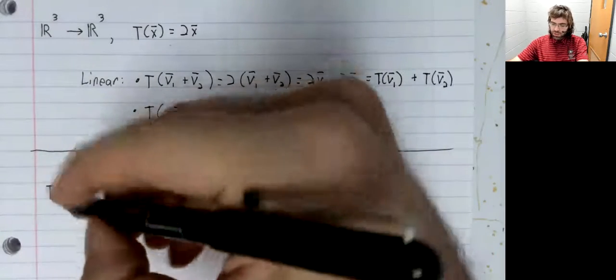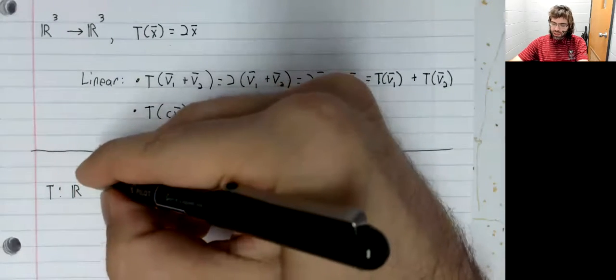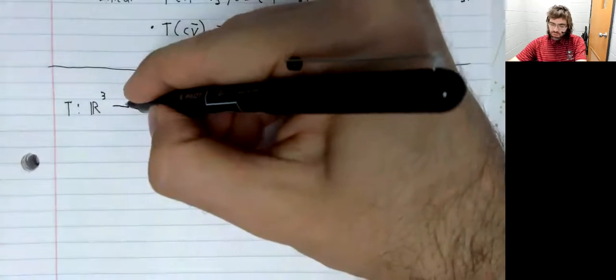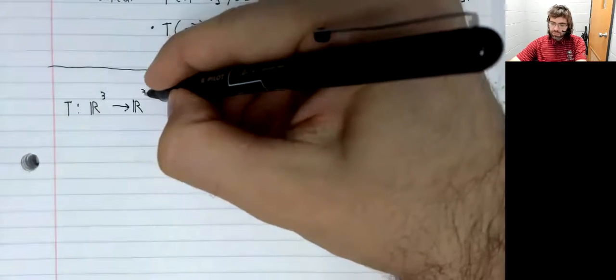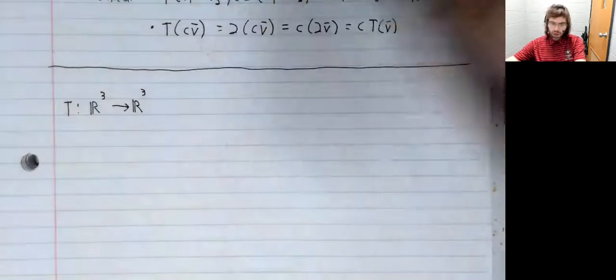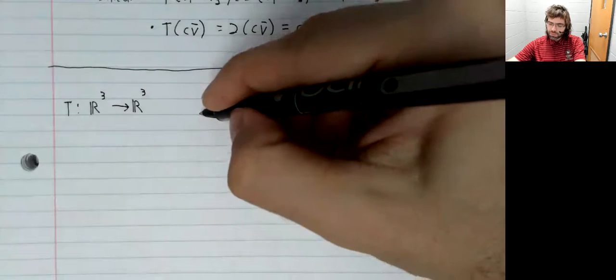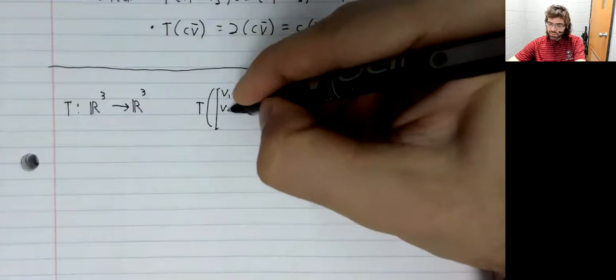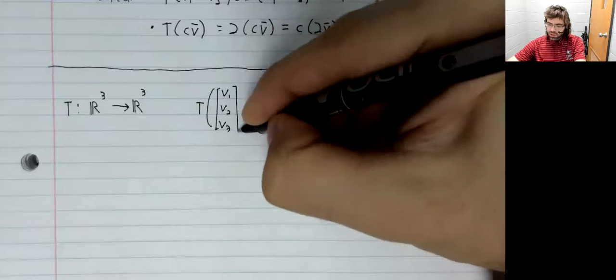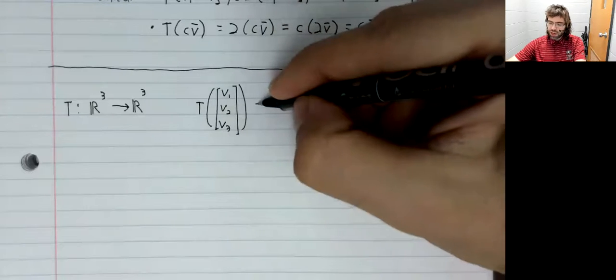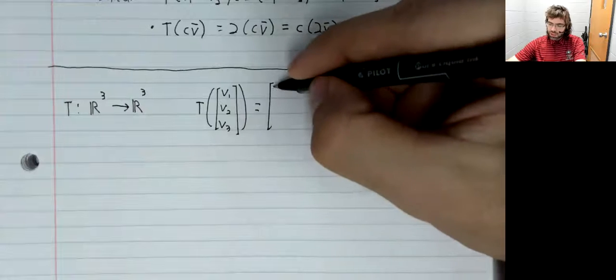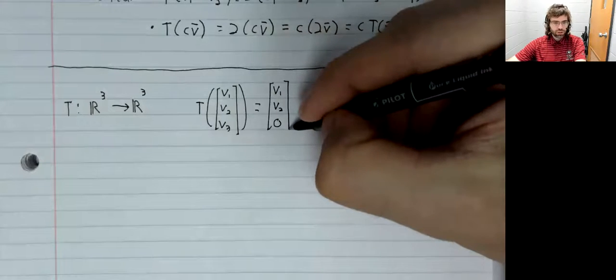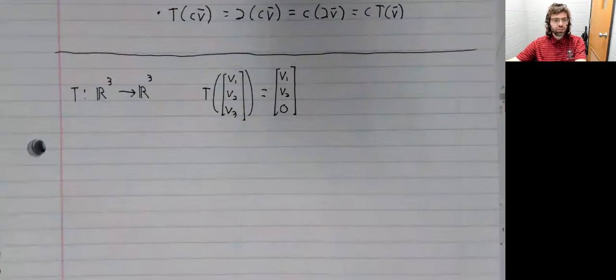Let's look at a completely different example where no multiplication is to be found. A transformation from R³ to itself. What this transformation is going to do is take a vector in R³, and whatever the third coordinate of that vector is, it's going to turn to zero.